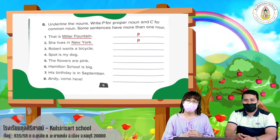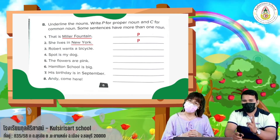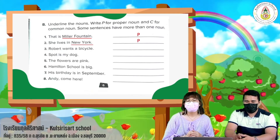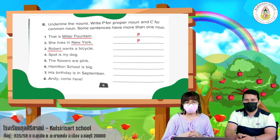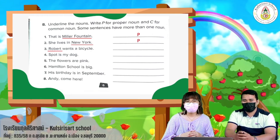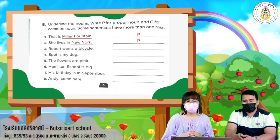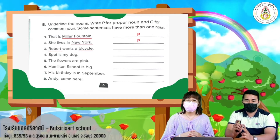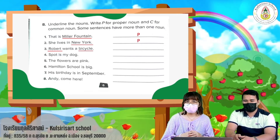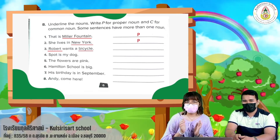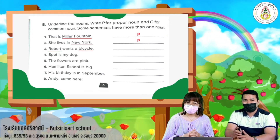Next sentence: 'Robert wants a bicycle.' In this sentence we have two nouns — Robert and bicycle. Robert is a name of a person, so it's a proper noun. Bicycle is a common noun. Write P and C.